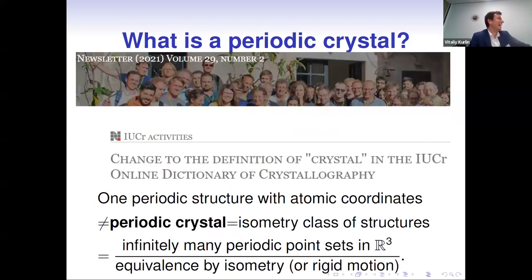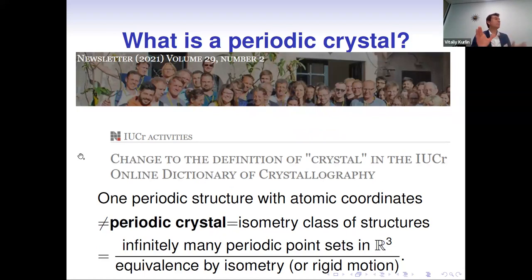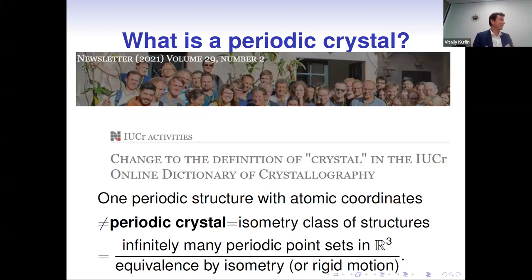There was some debate — equating crystals with periodicity is considered a heresy by some — but I think it's better to define crystals as having periodicity. Everything so far is about ideal periodic crystals. We understand quasi-periodic and more general periodic crystals are important, but our research is already technically sufficient for the periodic case.